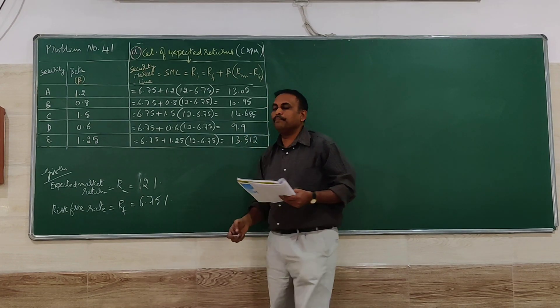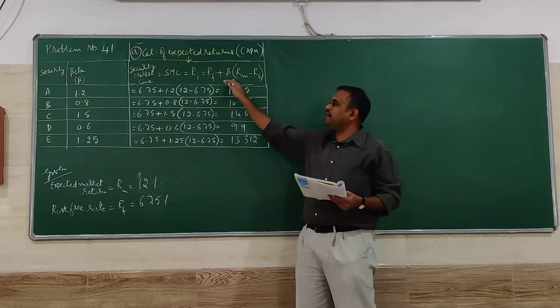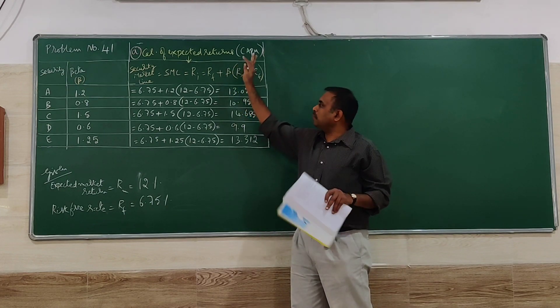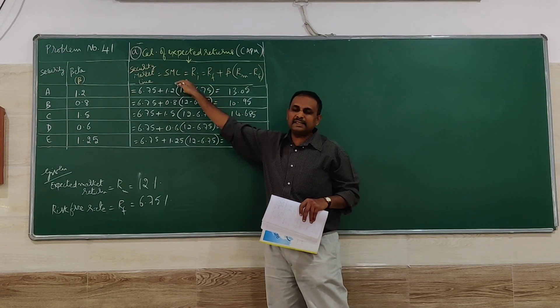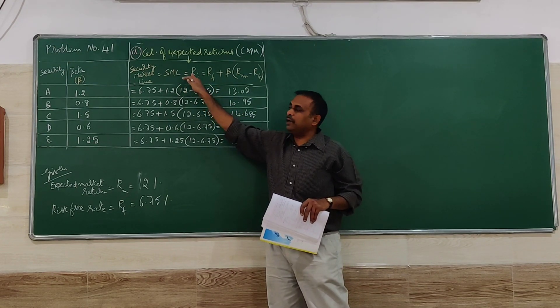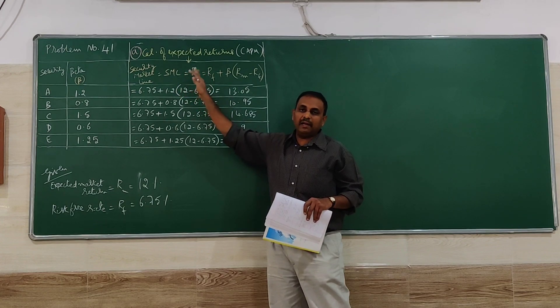Here the key is identifying which formula. Under the CAPM model for each one we are finding out, we have to go for SML, that is Security Market Line formula.